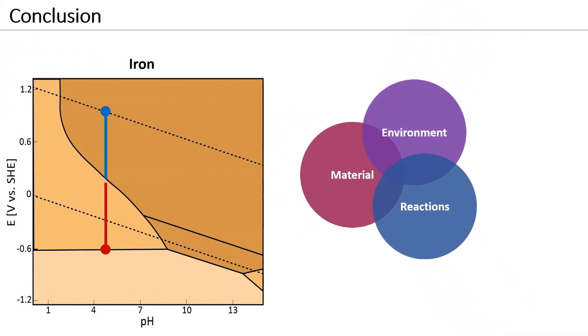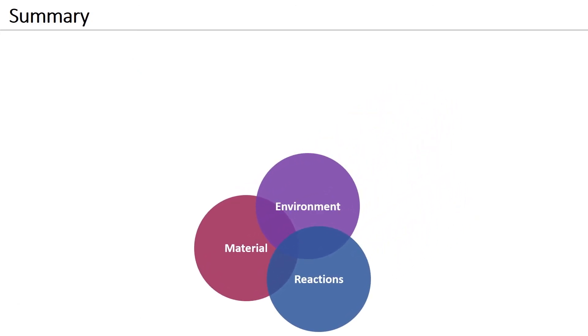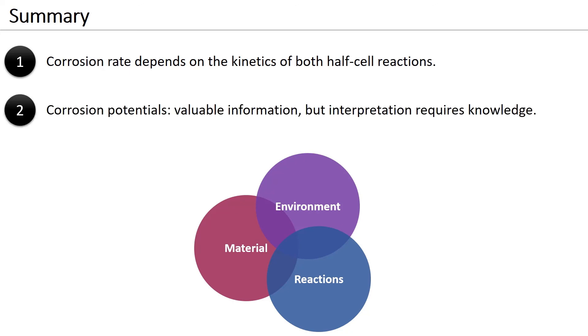In this video, we have seen that the corrosion state and rate depend on the kinetics of the involved half-cell reactions. Second, the corrosion potential of a metal can give valuable information about the corrosion state. Nevertheless, the interpretation of potential measurements requires detailed knowledge of the studied system, that is, the metal, the environment and the reactions. Finally, remember that corrosion is not a material property, it is a system property.